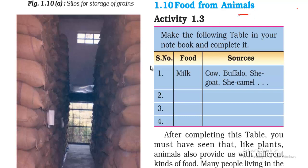Here is an activity: make the following table in your notebook and complete it. The table shows what food we get from animals. The first item is milk. What is the source of milk? Cows, buffaloes, goats, or camels.